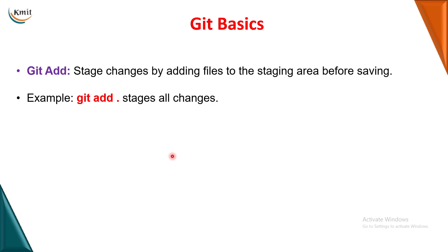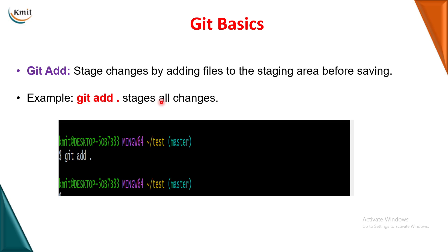The next command is git add. In the git workflow, we have three areas: working directory, staging area, and git repository. From the working directory, if you want to move your project into the staging area — where you decide which changes have to be saved — use git add. You can write git add dot to add all changes, or git add a.txt to add only a specific file.